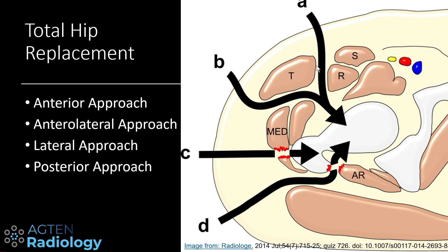We have the anterior approach here between the rectus femoris muscle and the tensor fasciae latae muscle. Then we have the anterolateral approach, which is running just laterally to the tensor muscle and between the abductor muscles into the joint.